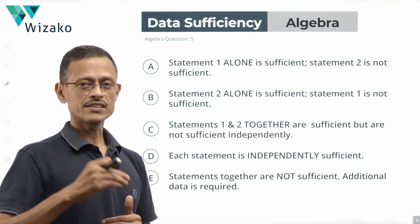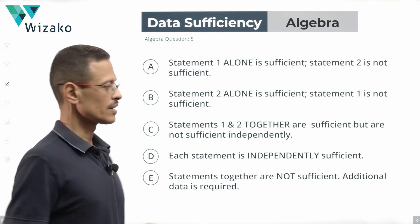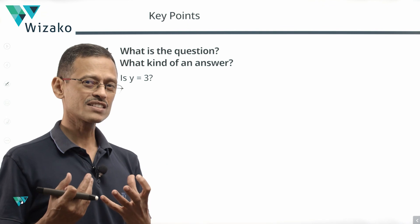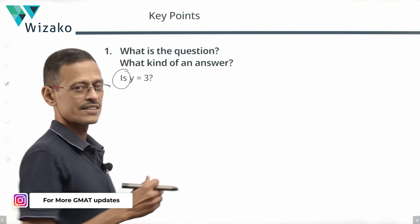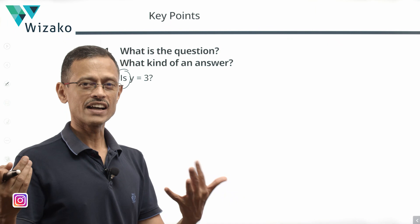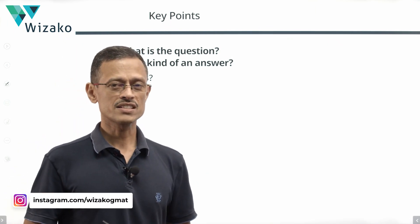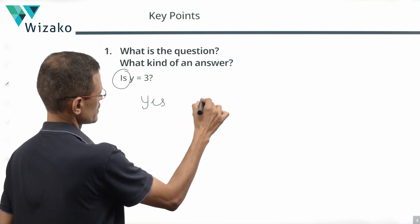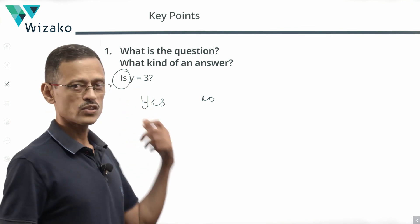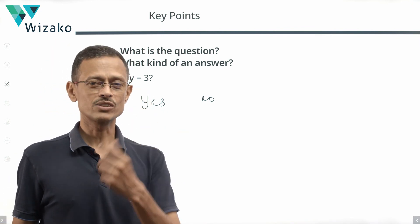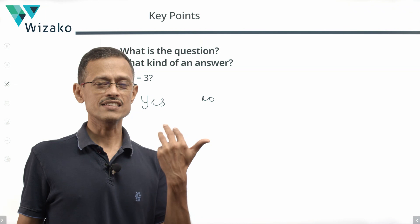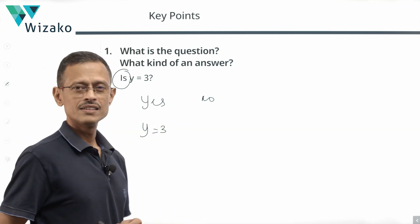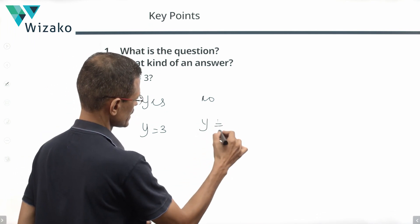Before we look at the statements, let's get clarity at the question stem level. The question is: is y equal to 3? It's a question that starts with a 'be' verb — starts with 'is,' 'are,' 'where' — these kinds of questions. How will you answer a question that starts with 'is'? The answer is going to be yes or no. The answer is yes when y is equal to 3, and the answer is no when y takes any value other than 3.